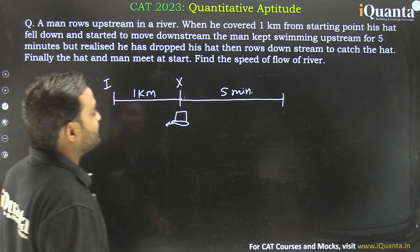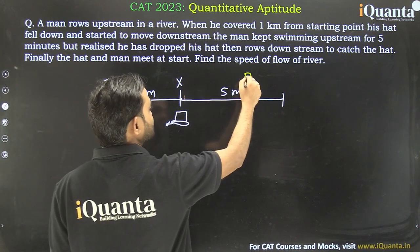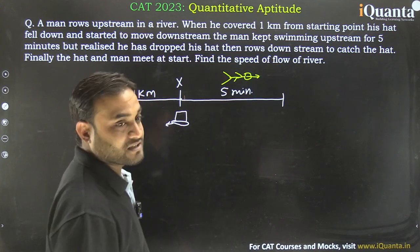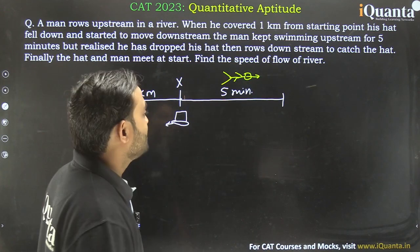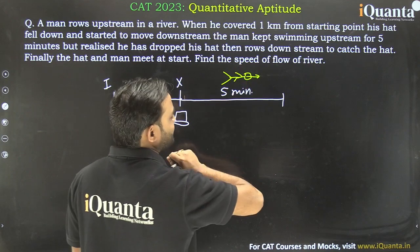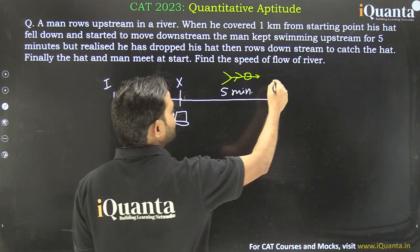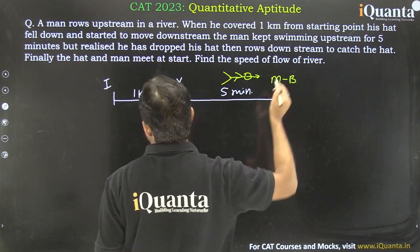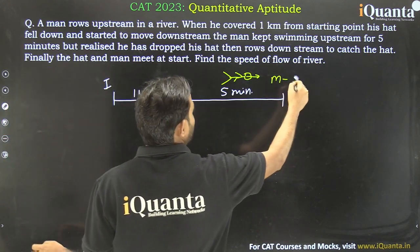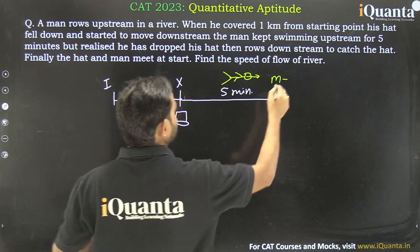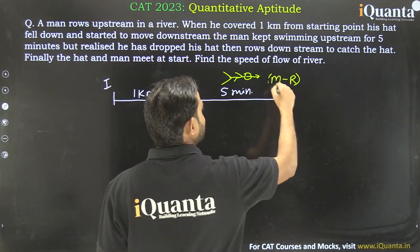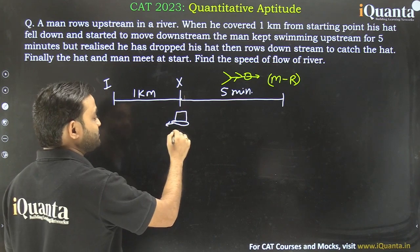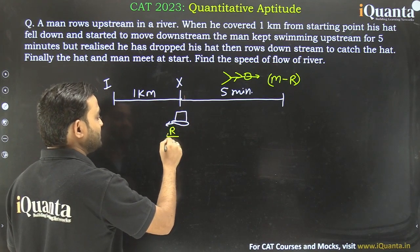Now this man is going forward upstream. Let us draw the diagram. The speed of this man during this time will be speed of man minus speed of river, that is m minus r. And the speed of the hat at this time will be the speed of the river r, since the hat is going downstream.